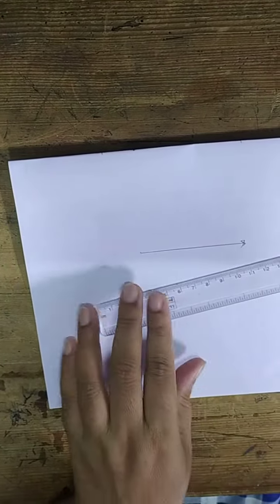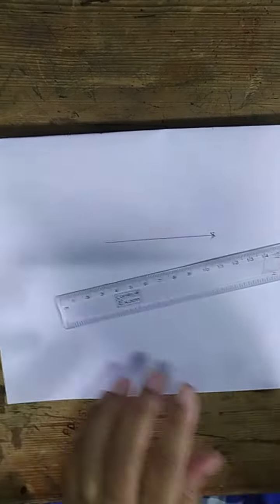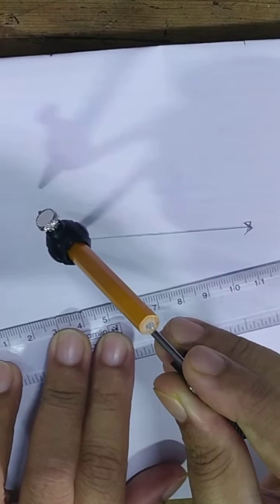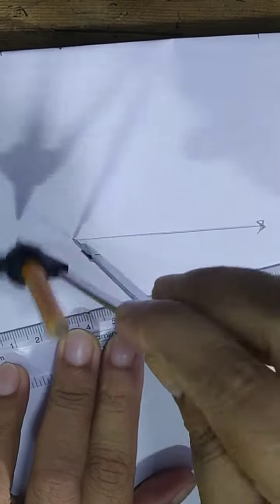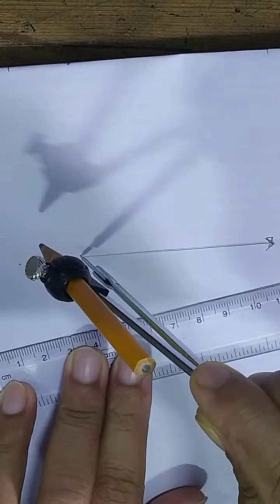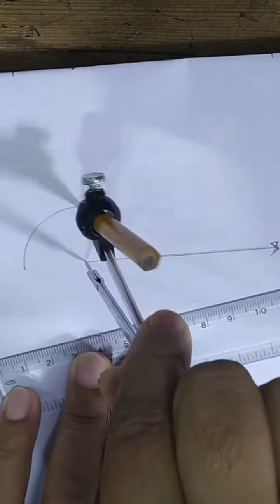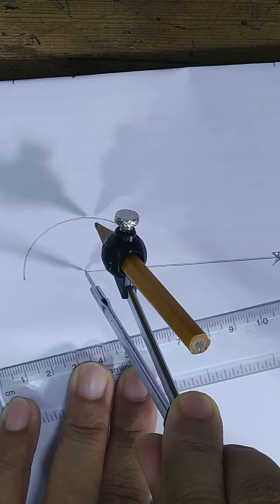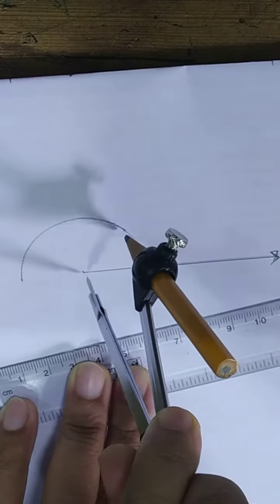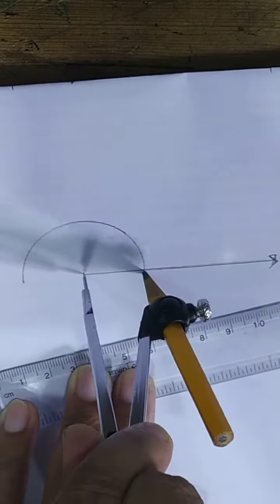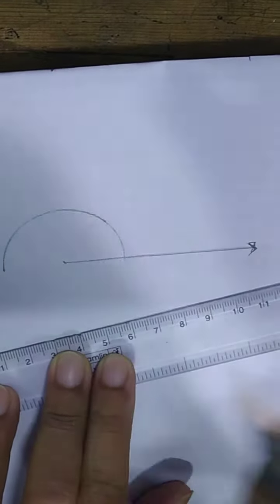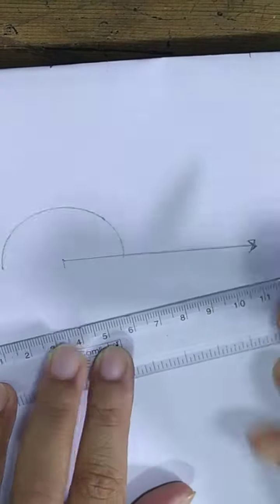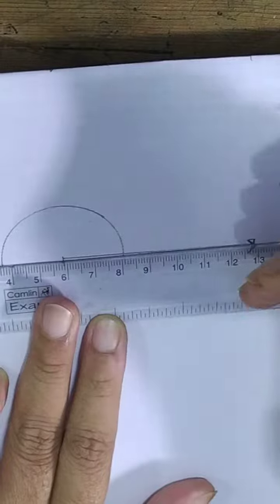If this is the arm and this is the vertex, first let us draw the angle of 90 degrees. For drawing the angle of 90 degrees, we have to take the arc. As we have seen this before, this is the arc for 90 degrees. When you draw the arc for 90 degrees, we can just increase the lower arm.